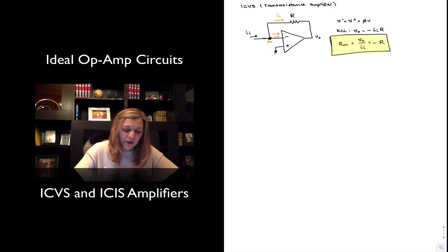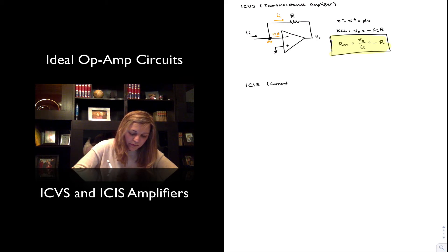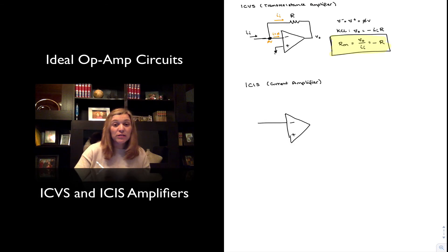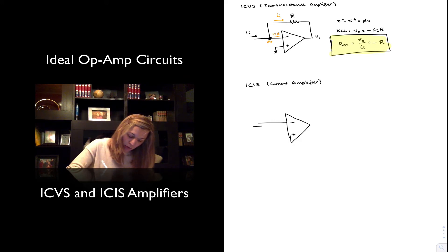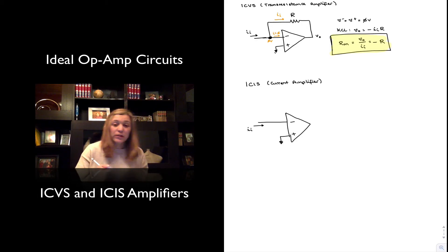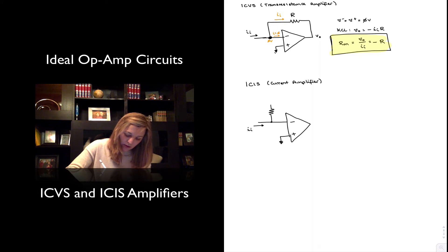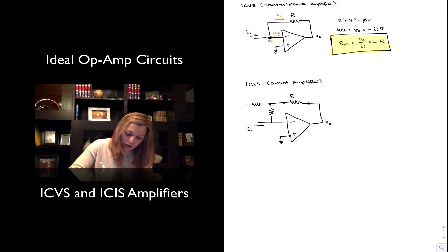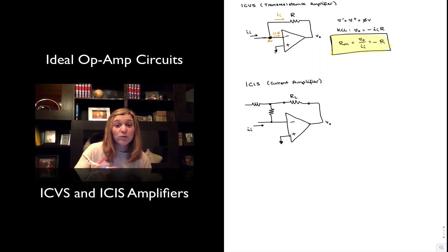So this is an example of a transresistance amplifier. And then finally, an example of a current amplifier — a current-controlled current source. I have an op-amp with its two terminals. I'm going to have a current input and a current output, since it's a current-controlled current source. My current input is applied to the inverting input terminal, and the non-inverting input terminal is connected to ground. I have a T-network connection of resistors, where the output is a current flowing through a load resistor R_L, which is connected in the feedback path — another example of a floating load circuit.